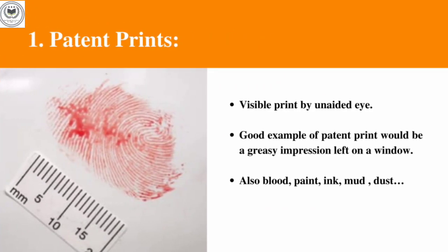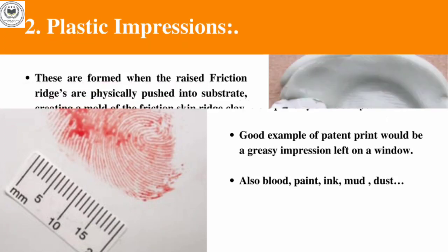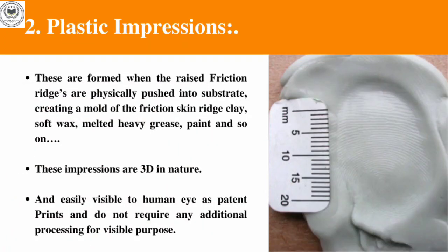Patent prints, or visible prints, are visible to the naked eye. These are 2D in nature, having length and width. A good example of a patent print would be a greasy impression left on a window. Blood, paint, ink, mud, and dust are also examples of substances that can leave patent prints.